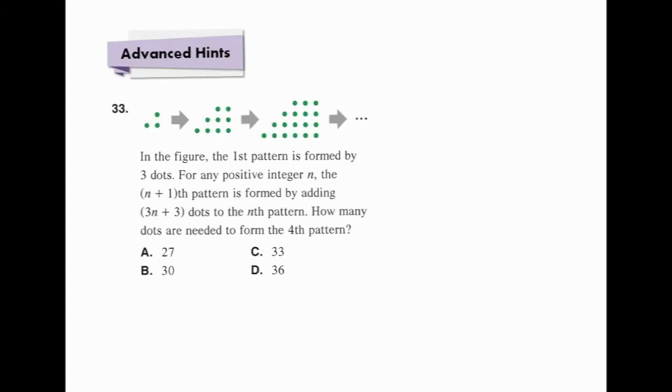Next, we will discuss a special question of sequence. Let's read this sentence carefully. The n plus 1th pattern is formed by adding 3n plus 3 dots to the nth pattern. We are now going to find the fourth pattern. If n is 3, then 3 plus 1 is the fourth pattern.